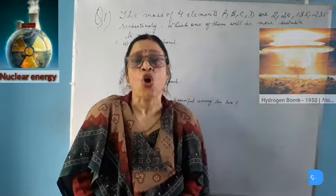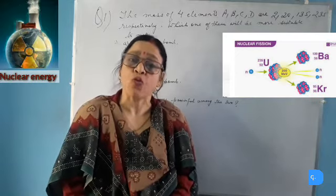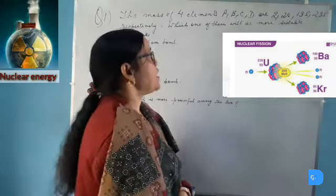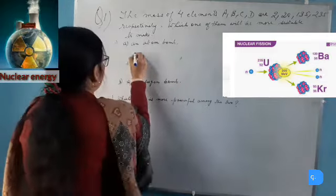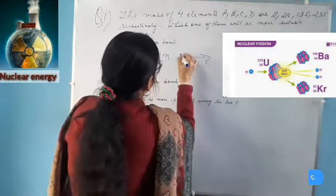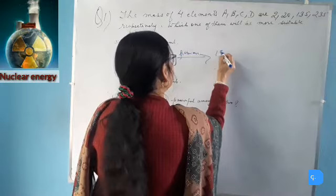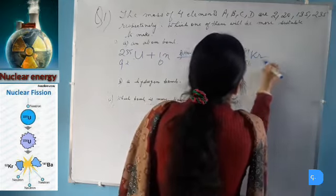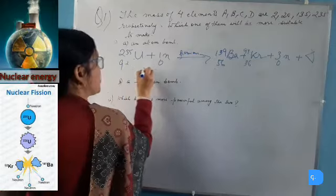An atom bomb is based on a nuclear fission reaction in which a heavy nucleus atom is bombarded by a neutron to split into two smaller nuclei. So among the four, the heaviest element is D having the highest atomic mass of 235. Element D will be used for an atom bomb. The reaction is: U-235 + neutron → barium + krypton + three neutrons, along with a tremendous amount of heat. This is the nuclear fission reaction of an atom bomb.